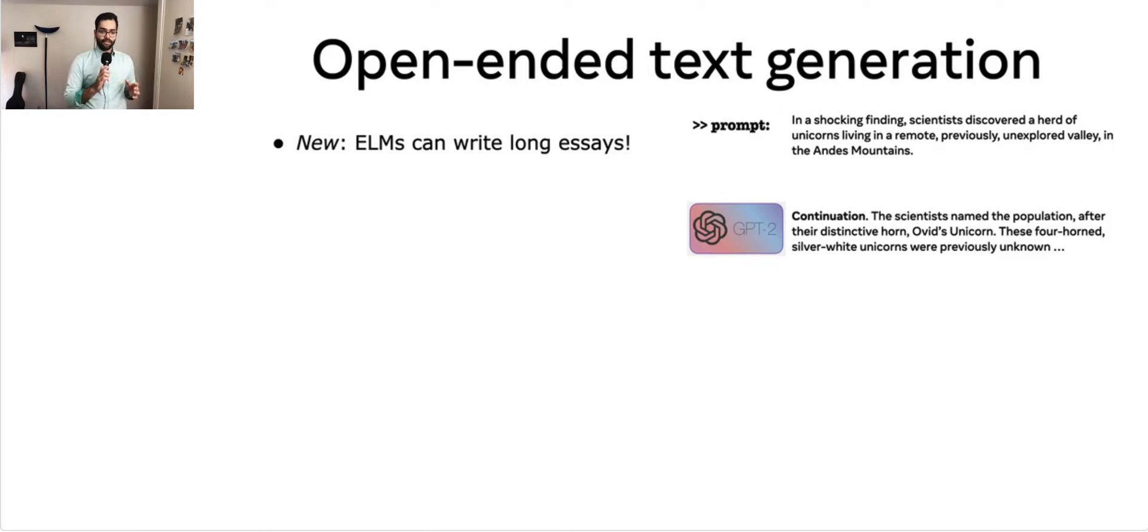These enormous language models also have a new capability, which previous generations of models, even three years back, did not. They can write long essays with remarkably high quality. This has led to the emergence of a new task, known as open-ended text generation, where the model is given a prompt and it must generate text in continuation of the prompt. Perhaps the most striking example of open-ended generation is this passage on Ovid's unicorn written by GPT-2. GPT-3, the latest iteration of this model, is even better. We only show the first two sentences of this generation, but in general, the task can require longer generations, such as one or two paragraphs, or even an entire essay.